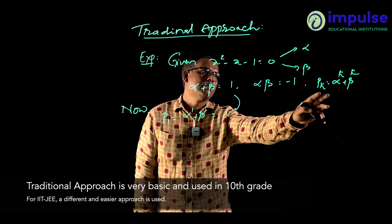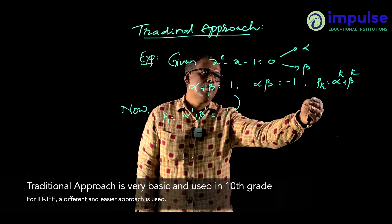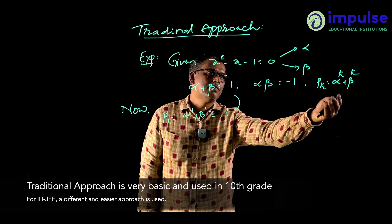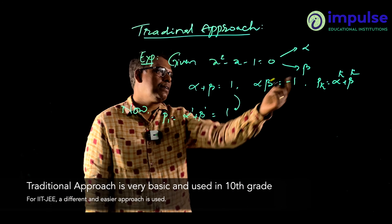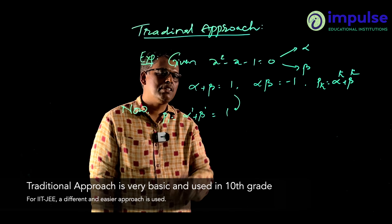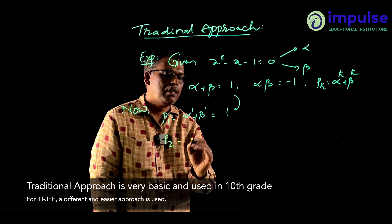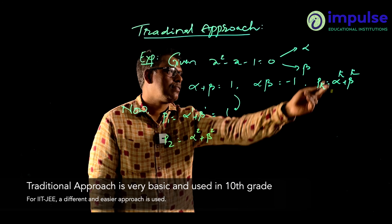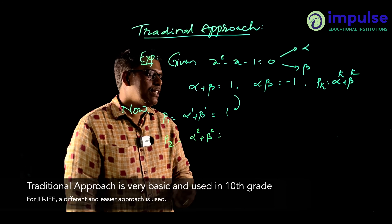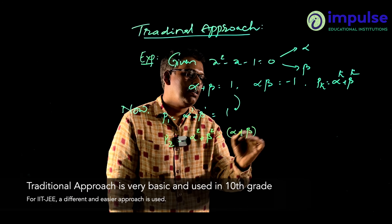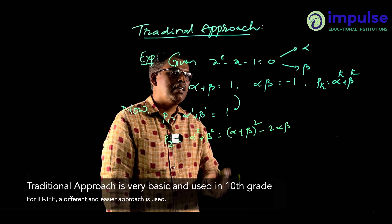Now let us calculate p_k = alpha^k + beta^k by plugging in k = 1, 2, 3, 4, 5. First, p1 = alpha¹ + beta¹ = 1. Now, p2 = alpha² + beta². We know that alpha² + beta² can be written as (alpha + beta)² - 2·alpha·beta.